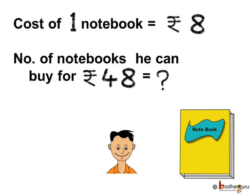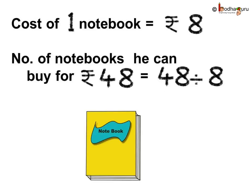Let us see what we need to find. As we know, he has 48 rupees. We need to find how many notebooks he can buy if the cost of each notebook is rupees 8. As we need to find the total number of notebooks he can buy for rupees 48, when the cost of one notebook is rupees 8, we need to divide the total money he has by the cost of one notebook, which is rupees 8.